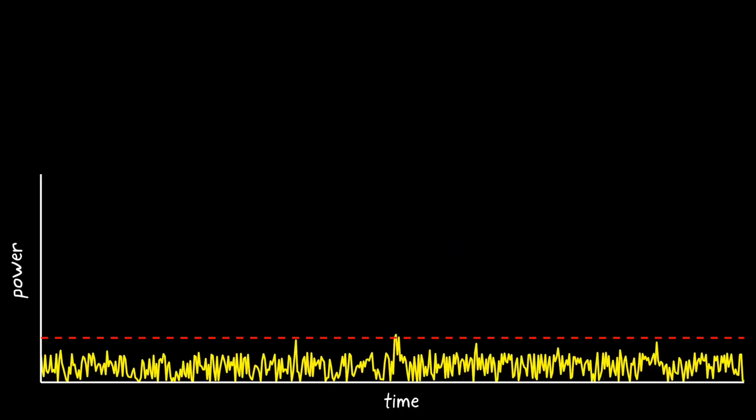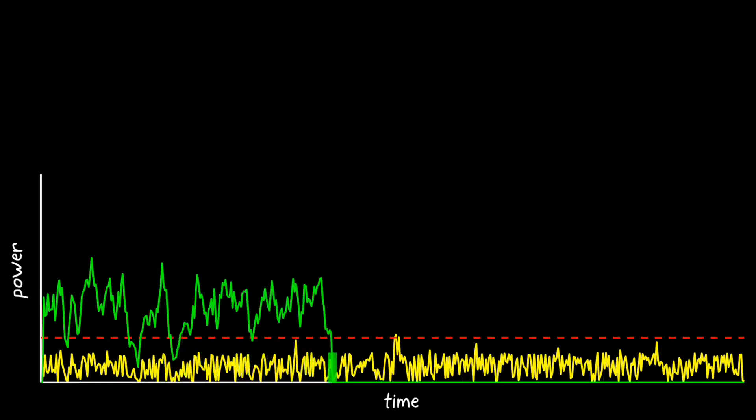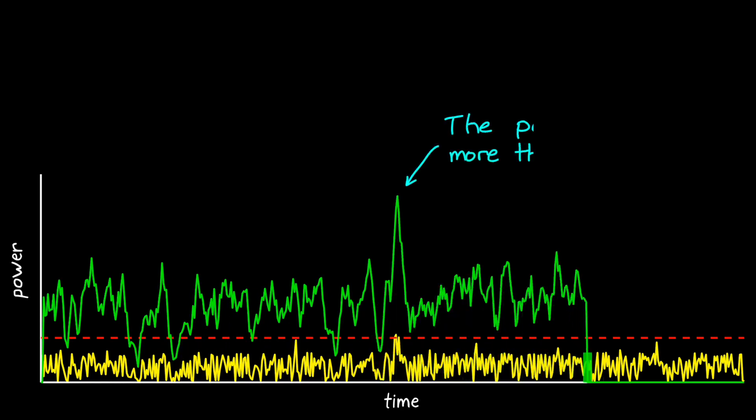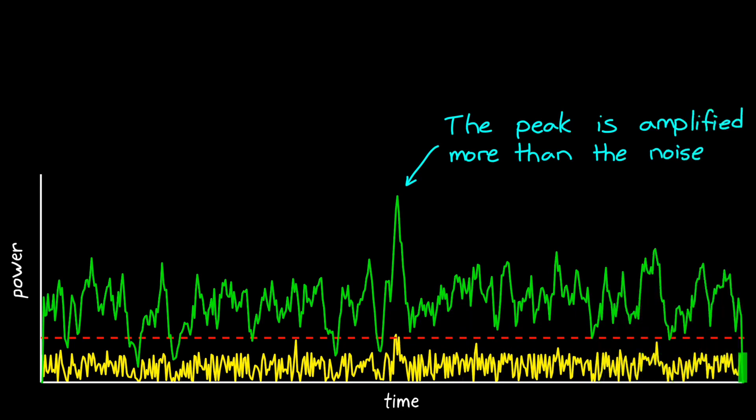If we go back to our noisy return signal and we sweep a matched filter across it, we can see that it is in fact amplifying the noise some since we're summing multiple values together. However, due to the fact that the filter matches the pulse, that summation is even greater for the pulse and we get an increase in signal gain over noise gain.